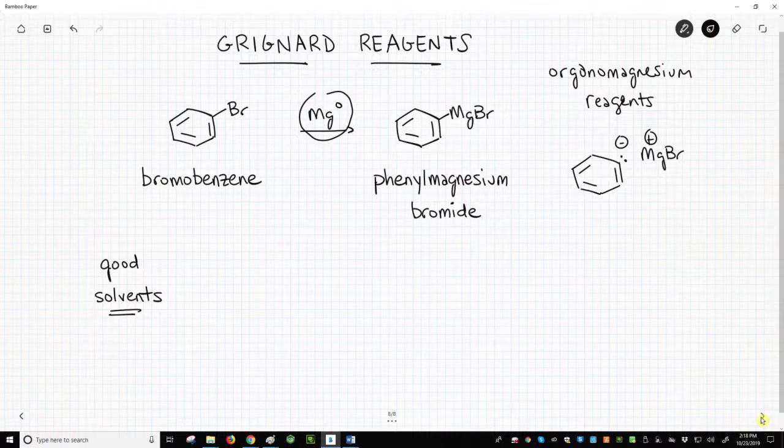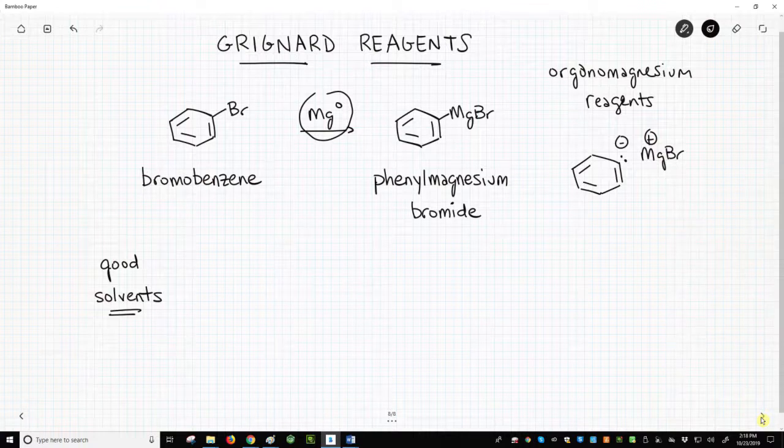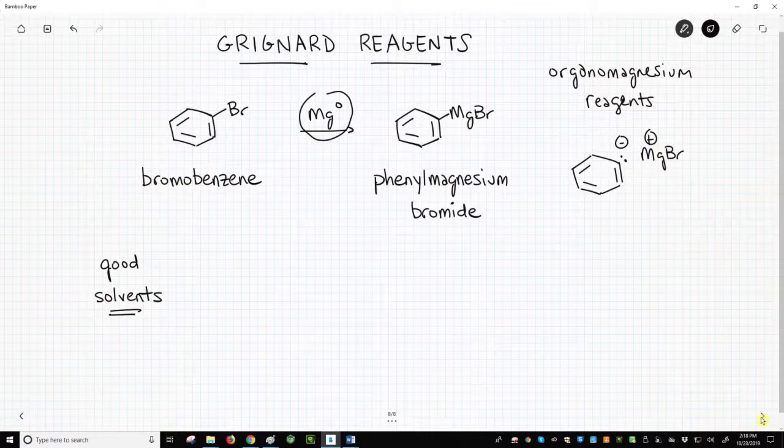Grignard reagents are very electron-rich at carbon, and they are both strong nucleophiles and strong bases. Notice that the magnesium has gone from the zero oxidation state to formally plus 2, and the bromide is minus 1.